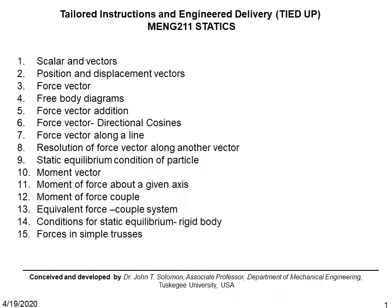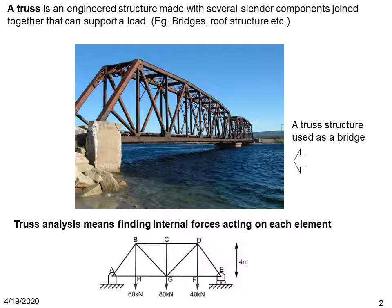Hello and welcome back. In this video we discuss concept 15: forces and simple trusses. A truss is an engineered structure made with several slender metallic components joined tightly so that the structure can support a load. Typical examples are bridges and roof structures. The picture shows a truss structure used as a bridge. Truss analysis means finding internal forces acting on each element of the structure.